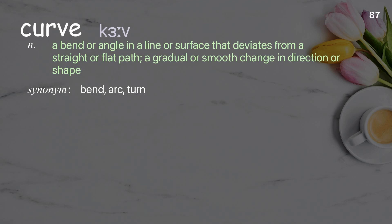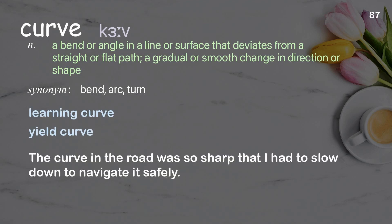Curve: A bend or angle in a line or surface that deviates from a straight or flat path; a gradual or smooth change in direction or shape. Examples: learning curve, yield curve. The curve in the road was so sharp that I had to slow down to navigate it safely.